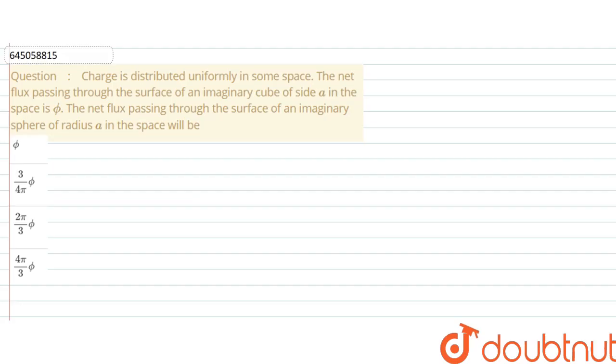Hello, we are given with the question and the question says that charge is distributed uniformly in some space. The net flux passing through the surface of an imaginary cube of side A in the space is phi. The net flux passing through the surface of an imaginary sphere of radius A in the space will be what?